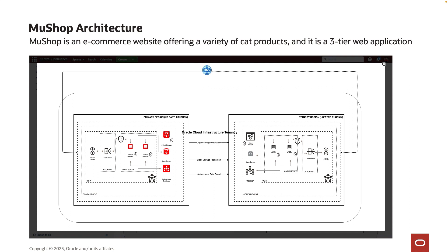From an application perspective, we run as a two-node cluster for hosting the MuShop application. In the standby DR region, we don't have any VMs running because this application has been architected to follow the cold VM DR. The block storage replication has been configured for the boot volumes for those two VMs from Ashburn to Phoenix region. Similarly, the object storage replication has been configured for the buckets.